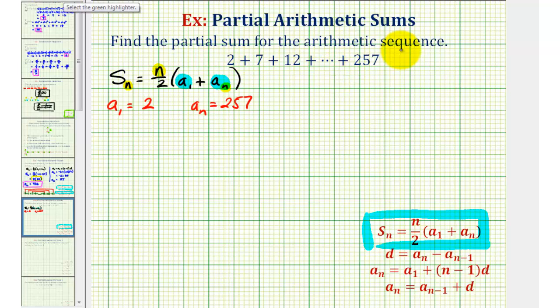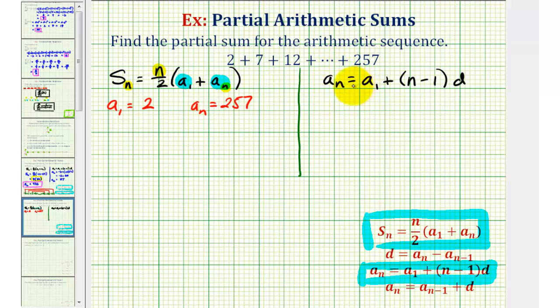But since we have an arithmetic sequence, we can use this formula here to determine the value of n. A sub n is equal to a sub one plus the quantity n minus one times d. So let's go over here on the side and determine the value of n. If our goal is to solve this for n, notice how we also have to find d, the common difference, which would be the constant that we're adding each time to find successive terms.